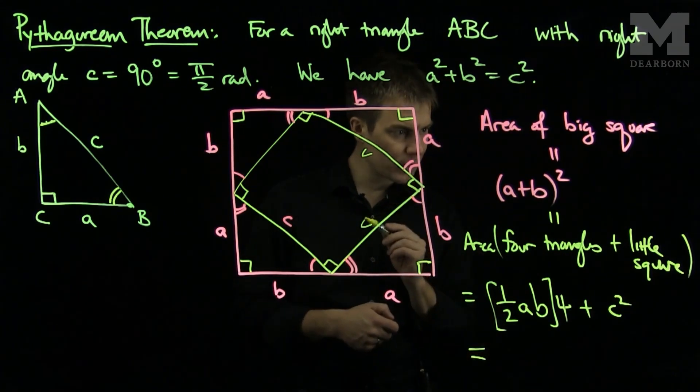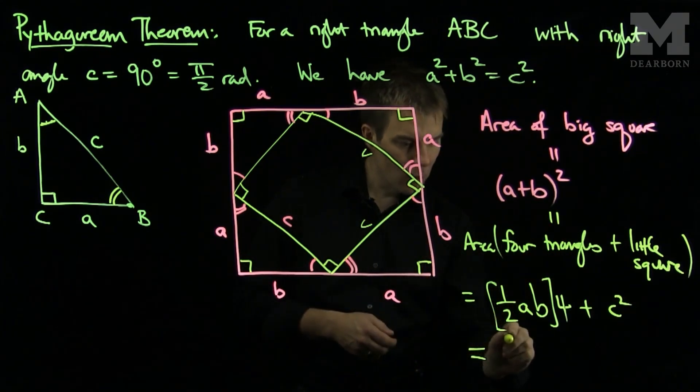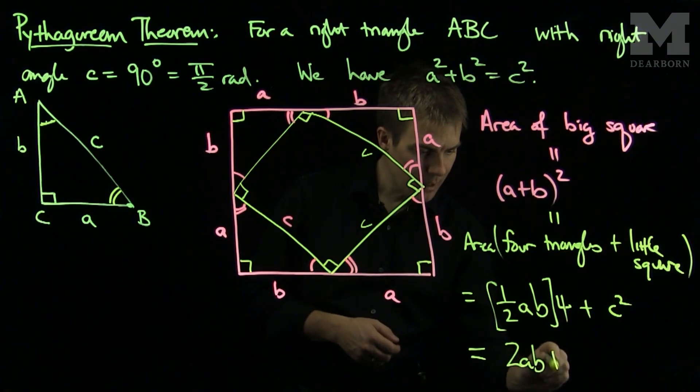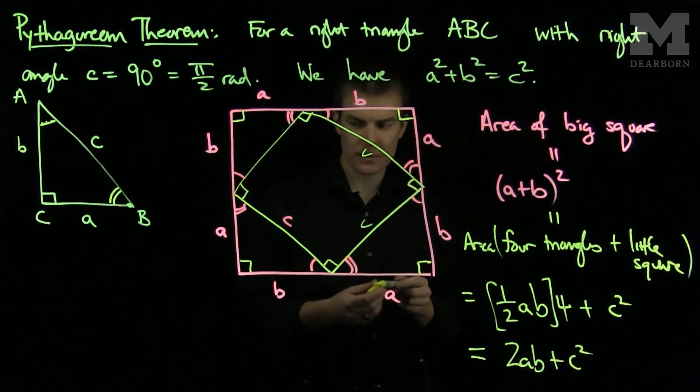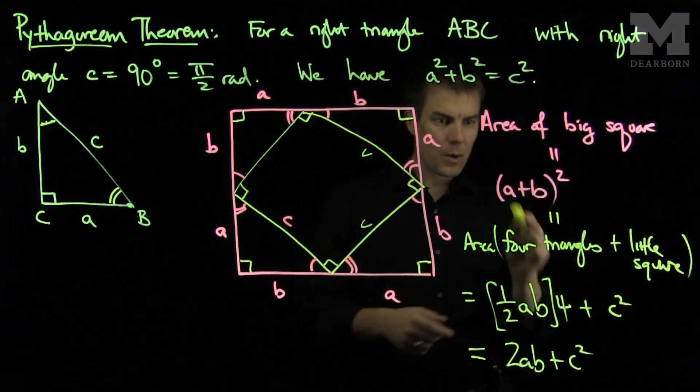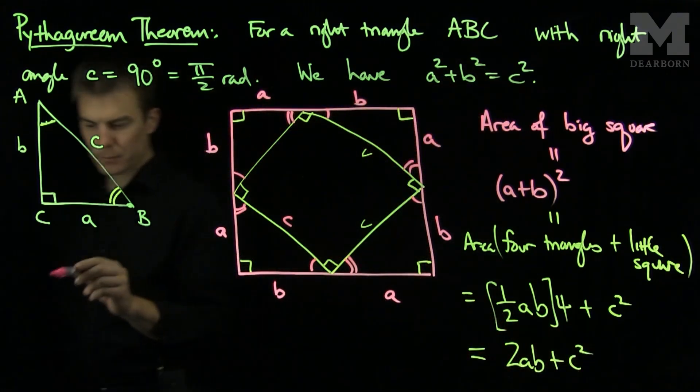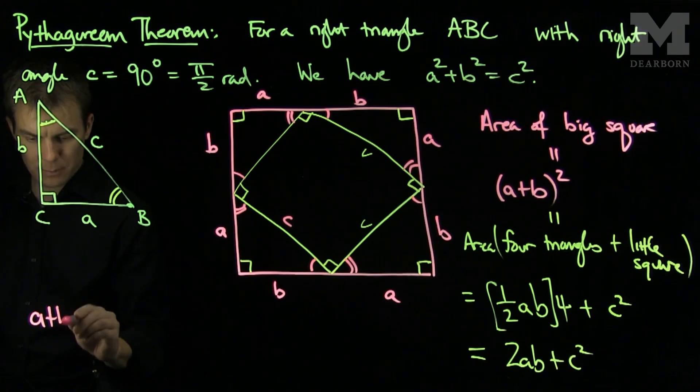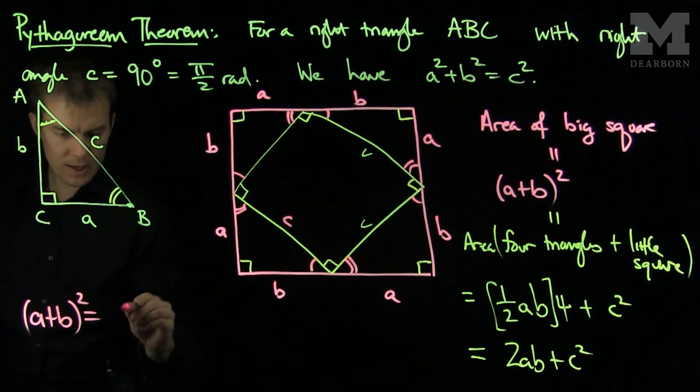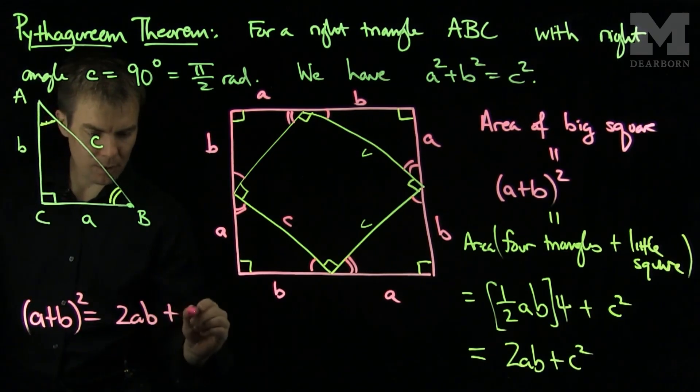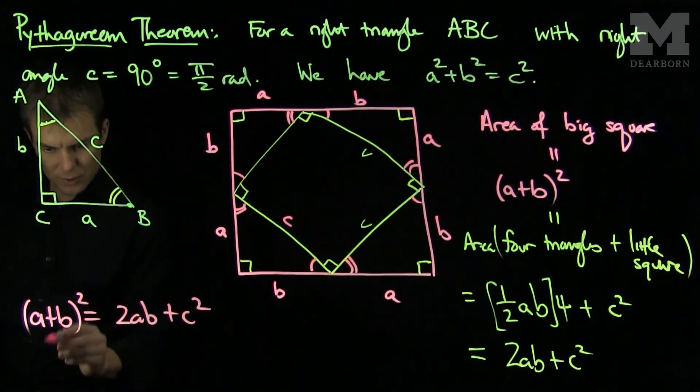So the area of the four little triangles and the little square will be 2ab + c². So we know that (a + b)² must be 2ab + c². So (a + b)² is 2ab + c².